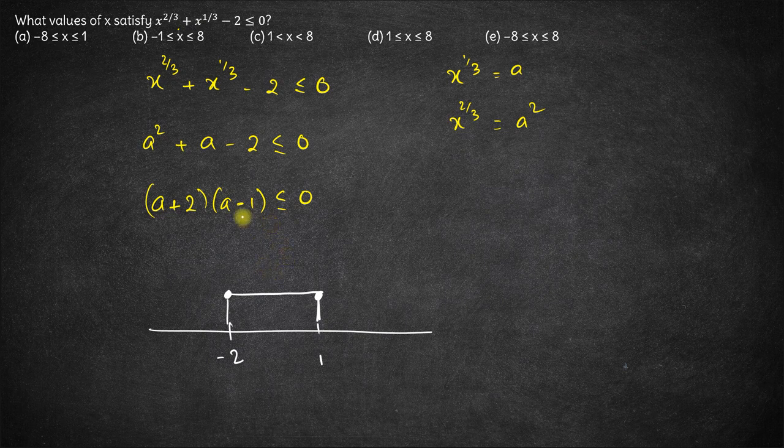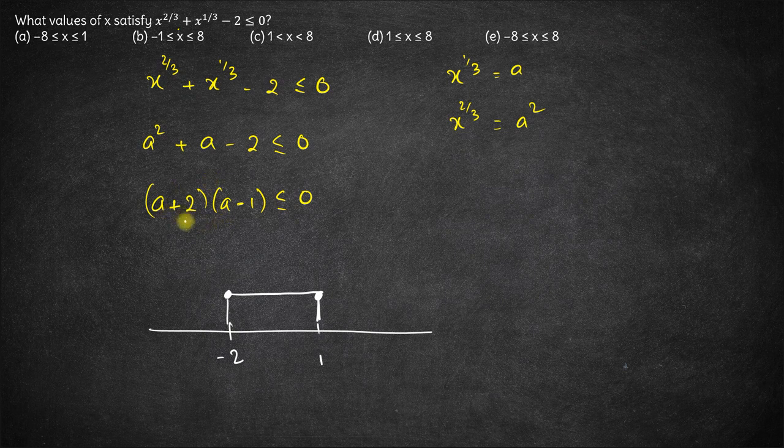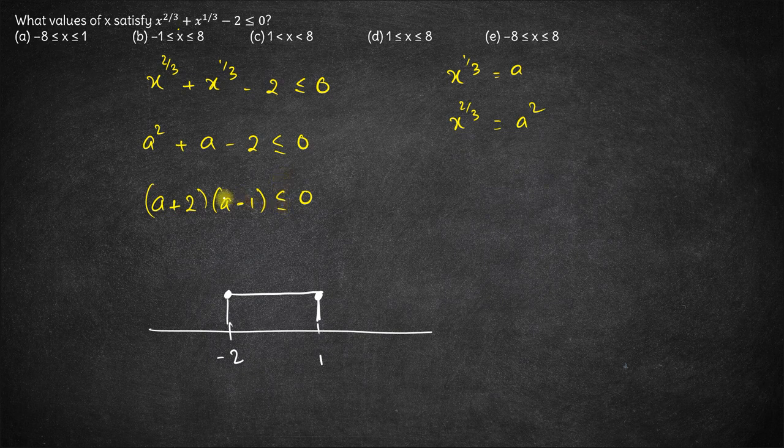We have seen this in inequality. If a is greater than 1 this will be positive. If a is less than minus 2 this product will come out to be positive. So for it to be less than or equal to 0, a should be between minus 2 and plus 1.